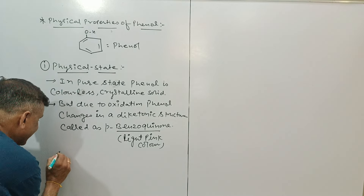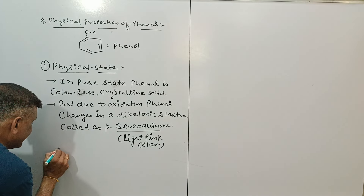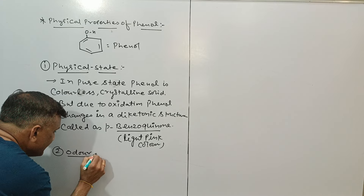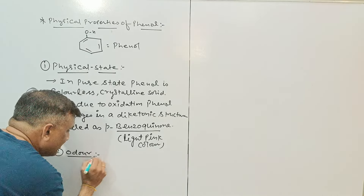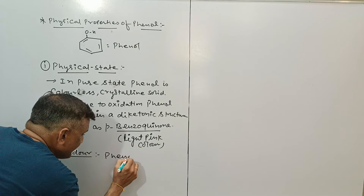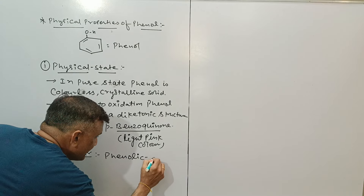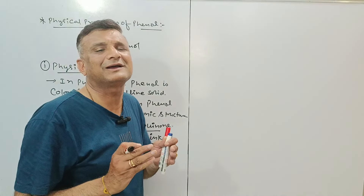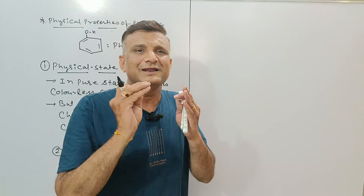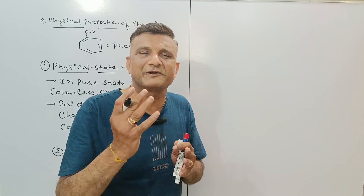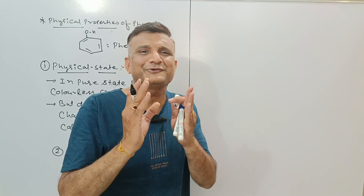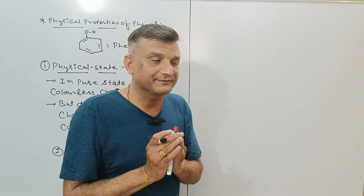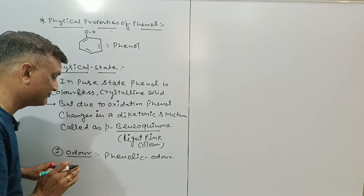The second property is color — or rather, after color we will take odor. If we go with the odor, then phenol gives a phenolic odor. You can say phenolic odor is similar to the smell of carbolic soap — a specific characteristic odor.